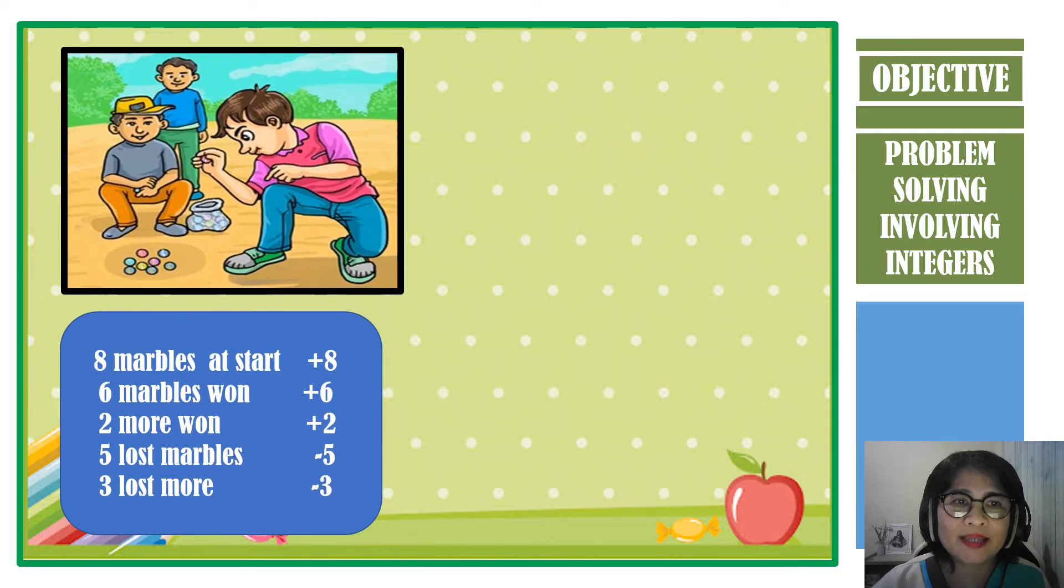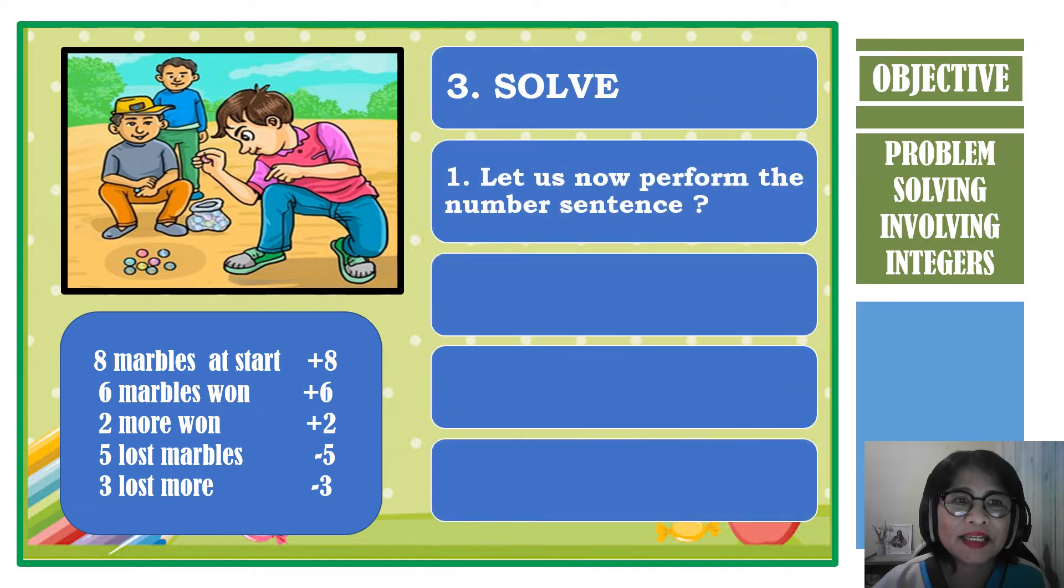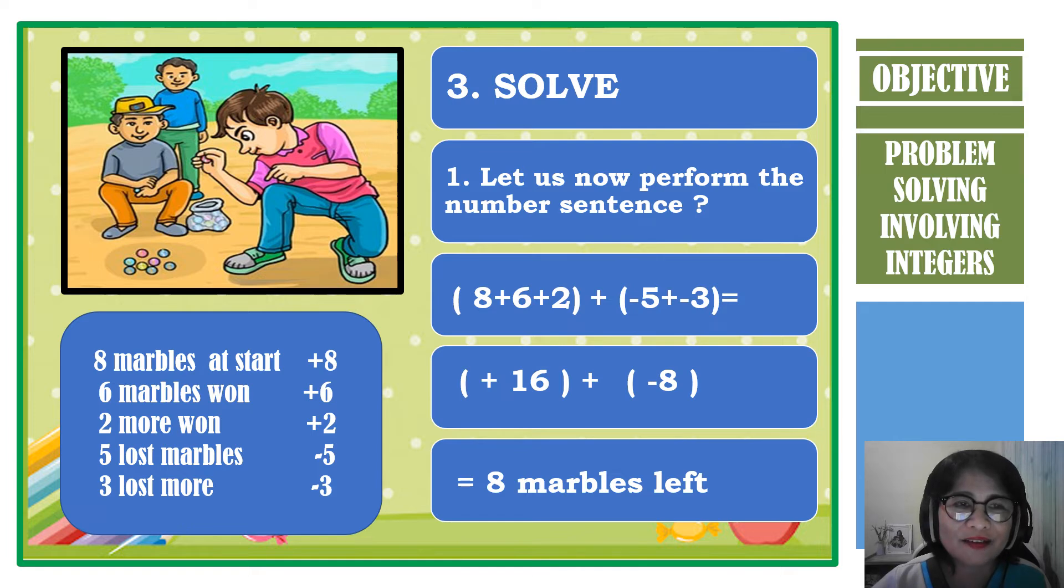After planning, we are ready to solve the problem. Let us add the number sentence. 8 plus 6 plus 2 is equal to 16, and negative 5 plus negative 3 is equal to negative 8. Then add positive 16 and negative 8. It is equal to 8. So therefore, there are 8 marbles left.